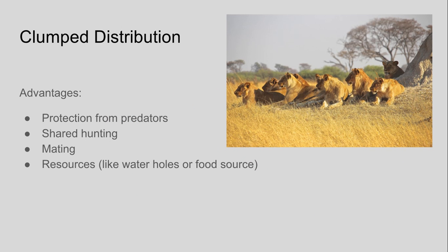Let's talk about clumped distribution. There are some advantages to being in a clumped distribution for your population. If you are a prey animal, there is protection from predators when you're clumped. This is best seen in a school of fish — think about hundreds of small fish swimming together in one big group. When a shark comes wanting to eat one, it can't focus on which one to eat. So clumping helps avoid predation. Clumping also means more animals are around to keep an eye out — one animal can be grazing, one can be watching one side, one can be watching another. If you're a prey animal, there are also advantages to clumping because of shared hunting.